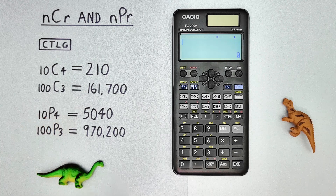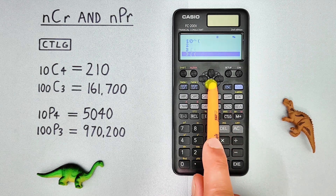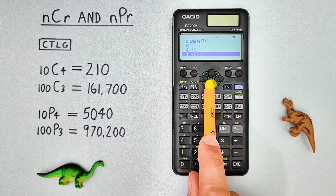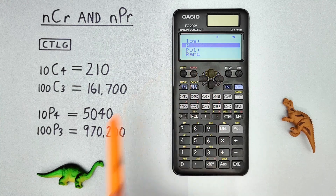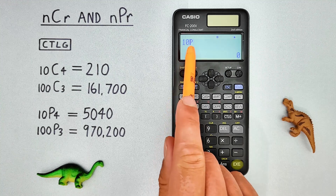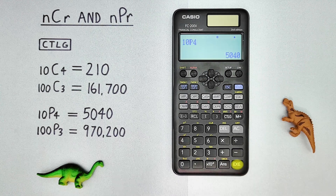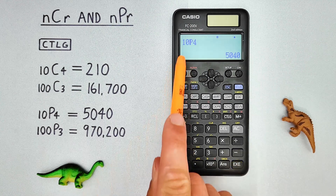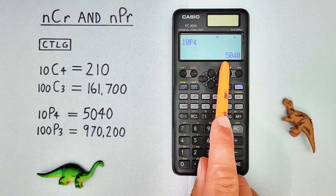Again, we start by entering the 10 and then going to Catalog. Then we scroll all the way down until we see the P there. Select that. So we have 10 permutations, and then the 4. Hit EXE. And we see we get the result of 10 choose 4 permutations is equal to 5040.